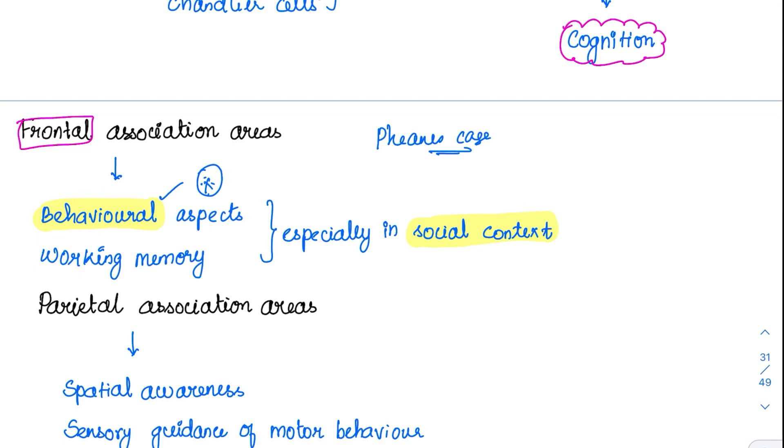And it is also involved in working memory. Especially the prefrontal cortex is involved in working memory. Working memory is, suppose if I tell you something and you remember it for a very short time by repeating it, that is working memory. Now coming to the next lobe, frontal is done, now going for the parietal.